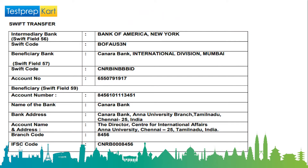For SWIFT transfer, intermediary banks such as Bank of America, New York, have the SWIFT code BOFAUS3N. The beneficiary bank is Canara Bank, International Division, Mumbai. The SWIFT field 57 code is CNRBINBBBID. The account number is 6550791917. If the beneficiary falls under serial number 59, the account number is 84561011113451.